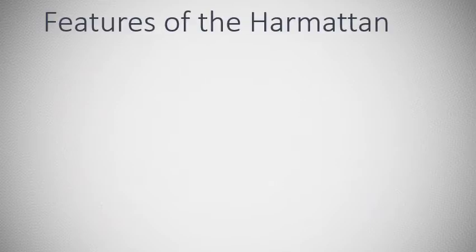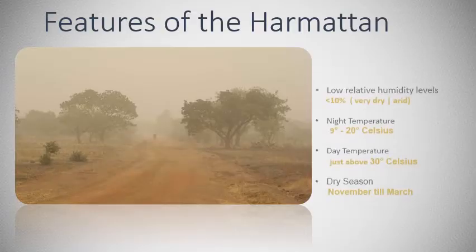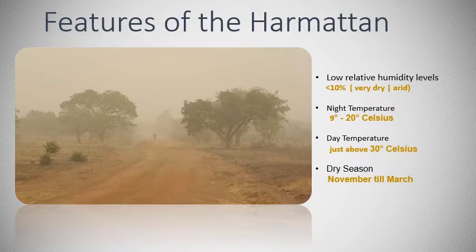Let's take a look at some properties of the harmattan. The harmattan produces very dry air with a low relative humidity of less than 10%. The temperature of the air can vary greatly from night to day. At night it can be quite cool, from 9 to 20 degrees Celsius, and during the day it is always around or above 30 degrees Celsius.